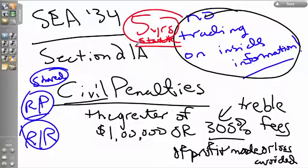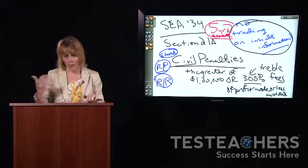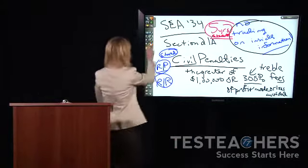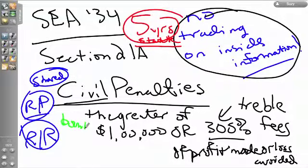You can be held liable to contemporaneous traders and found guilty of insider trading for five years after the act. To encourage people to report insider trading, we reward informants. If an informant gives information to the SEC in which there is the imposition of a civil penalty, the informant or informants will be rewarded a bounty of 10% of the penalty imposed.